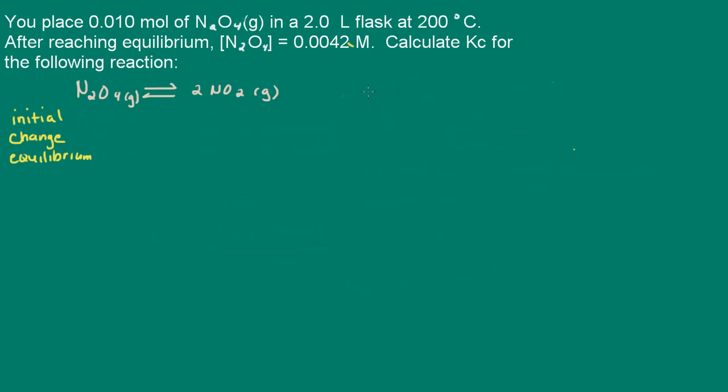Well, before we do anything, we should probably write the equilibrium constant expression for the reaction. Remember, that is products over reactants. Now, remember the coefficient becomes the exponent in the equilibrium constant expression.